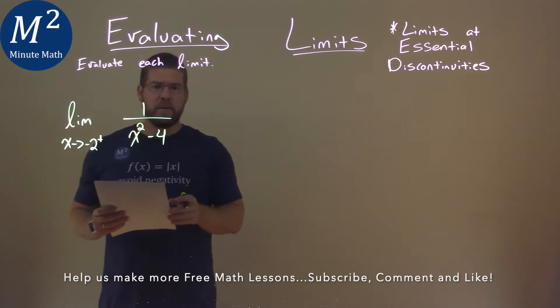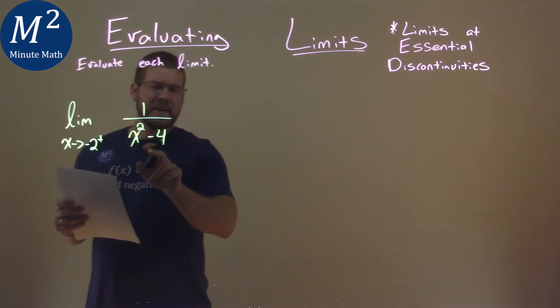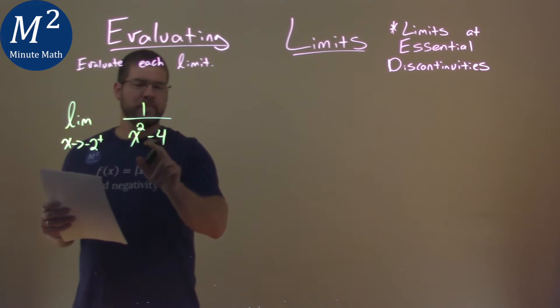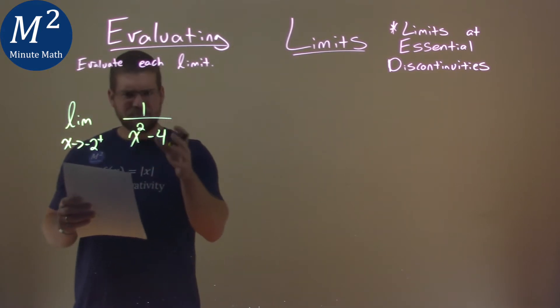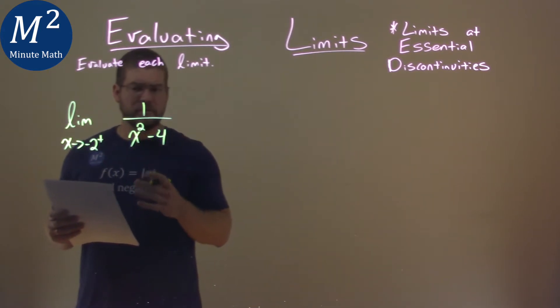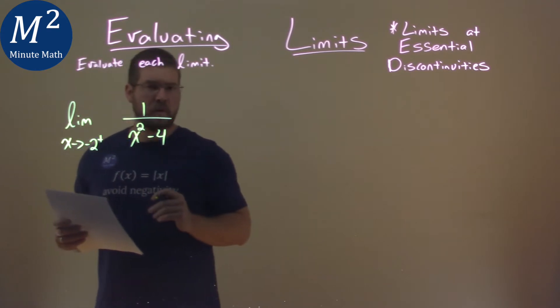Now, what's tricky here about this limit is we only have a 1 in the numerator, and we're dividing by some expression that can be factored, so let's go factor that to get a better idea of what's going on here.